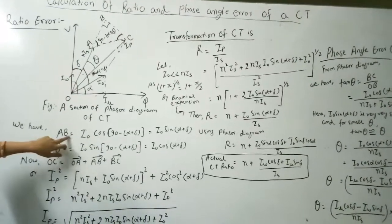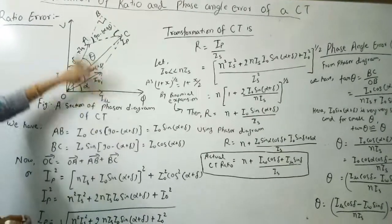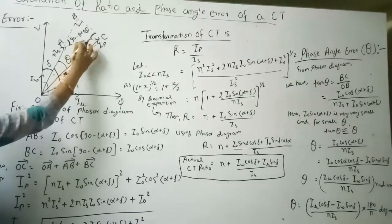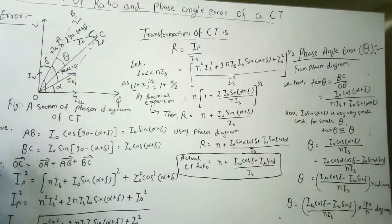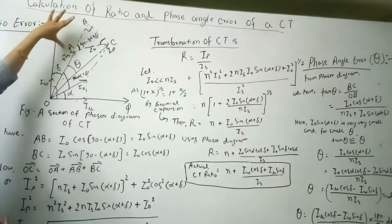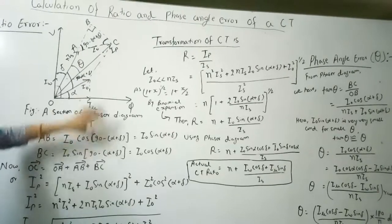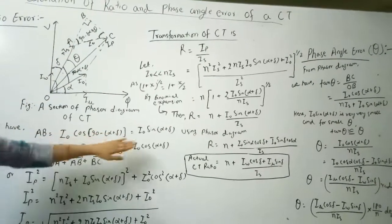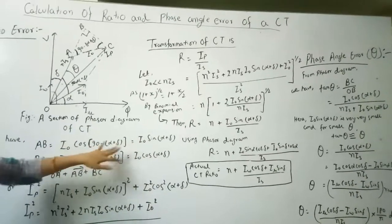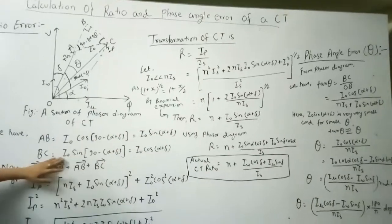Now, AB equals I₀ cos(90° − (α + δ)). Since cos(90° − (α + δ)) = sin(α + δ), we have AB = I₀ sin(α + δ).